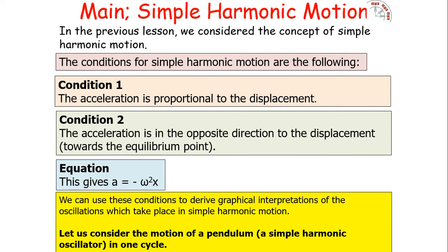In a previous lesson we considered the concept of simple harmonic motion. The conditions are: Condition 1 — the acceleration experienced by an oscillator is proportional to the displacement from its equilibrium position, but this acceleration must act in the opposite direction to the displacement, towards the equilibrium point. This gives us the equation: acceleration equals minus omega squared x, where the proportionality and opposite direction are both captured.